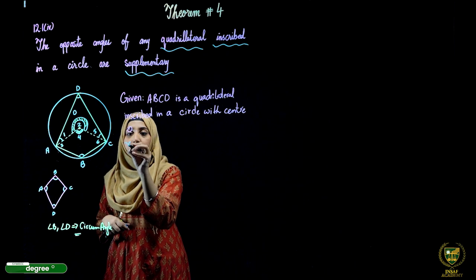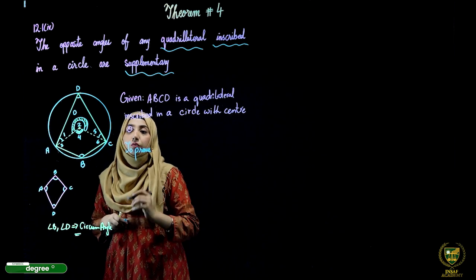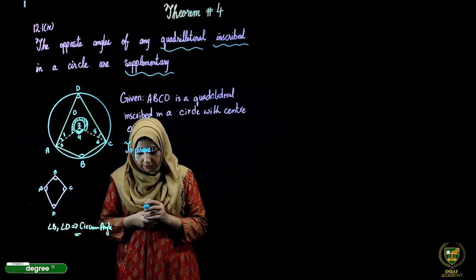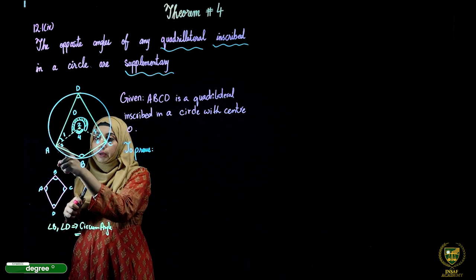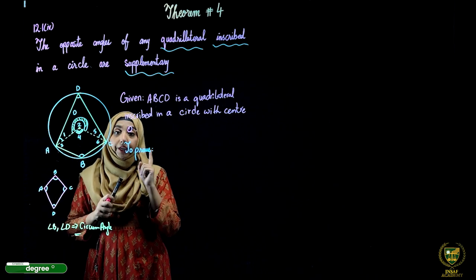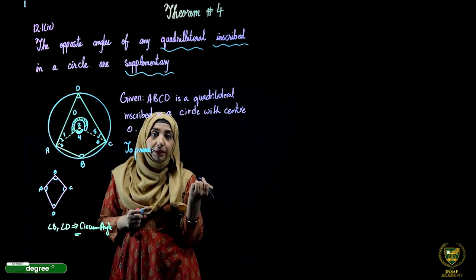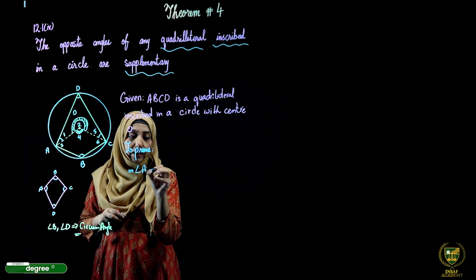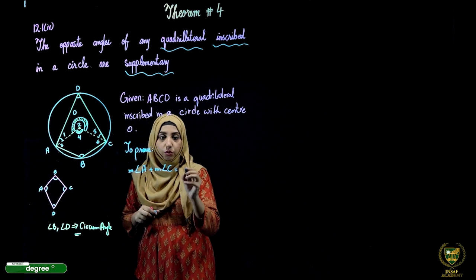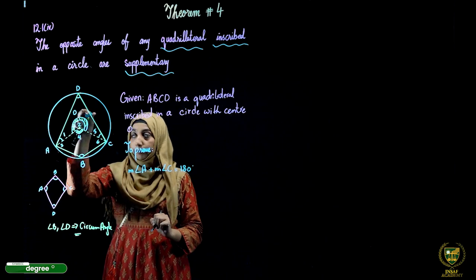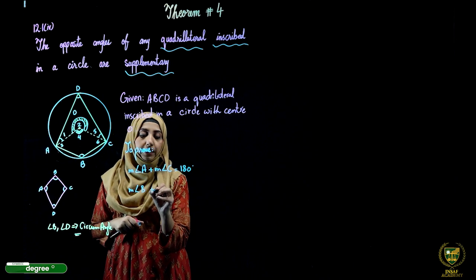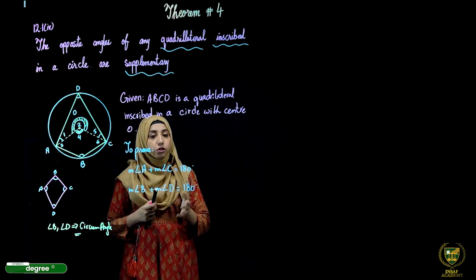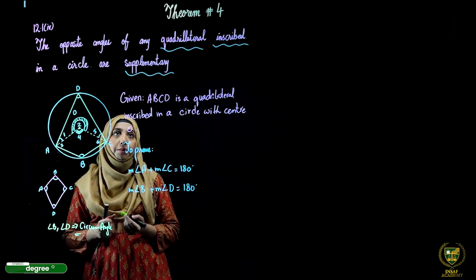To Prove: The opposite angles are supplementary. We have to prove that angle A plus angle C equals 180 degrees, and angle B plus angle D equals 180 degrees. These are the two conditions and two equations we need to prove.